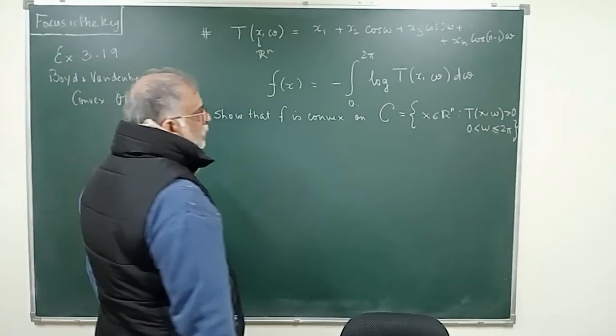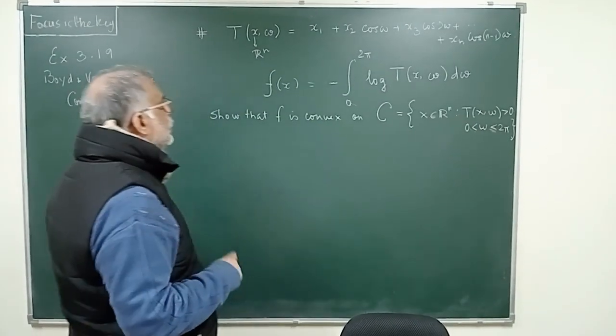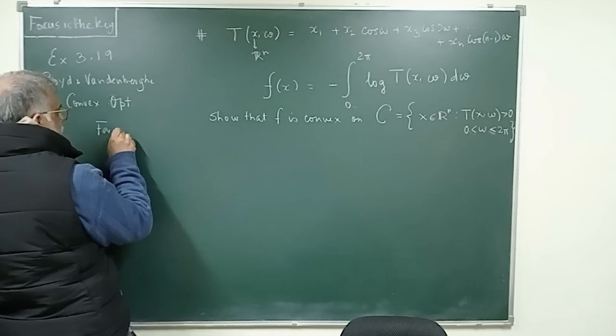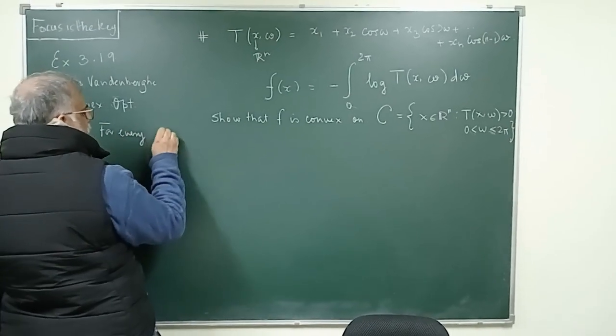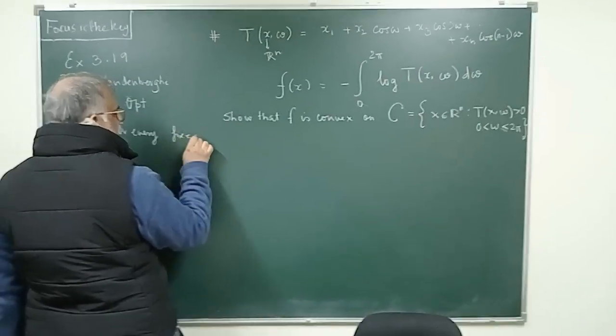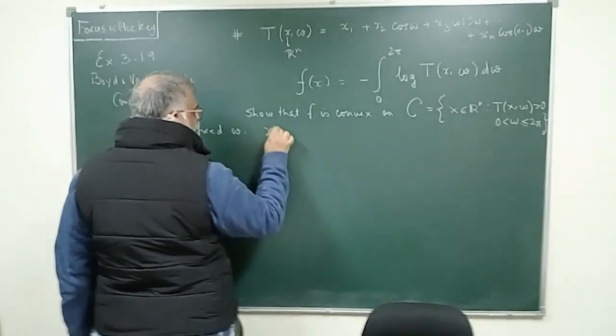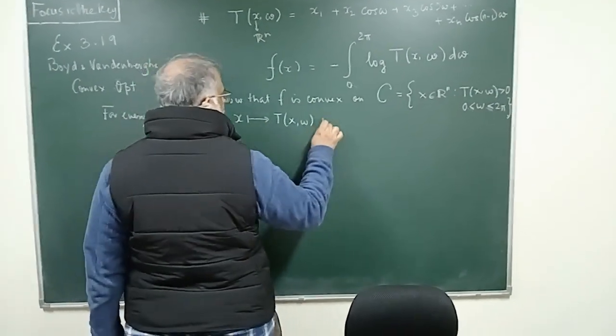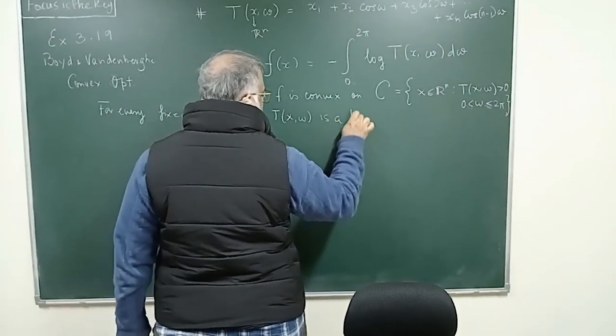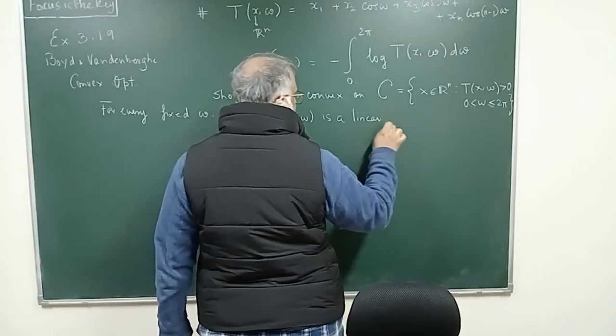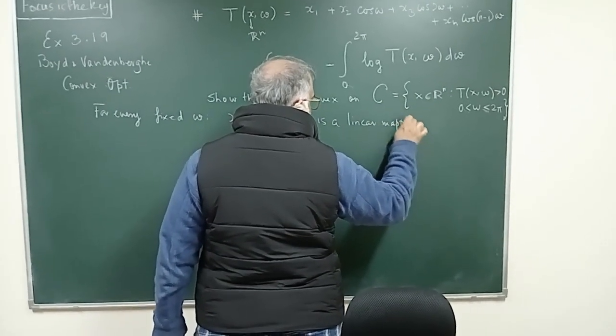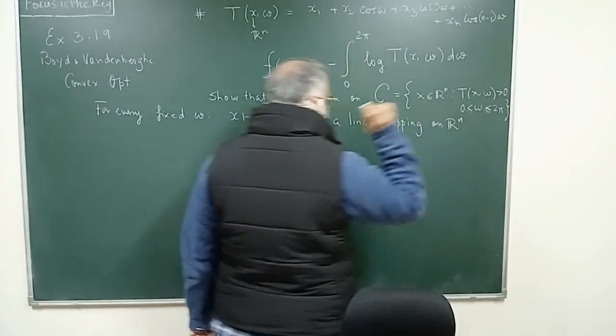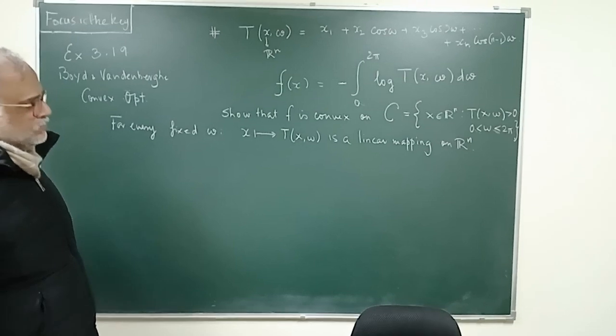Now, this set can be proved to be a convex set because first you have to understand that for every fixed ω, the mapping x to T(x,ω) is a linear mapping on R^n. This is the key factor.